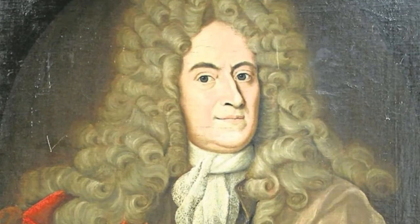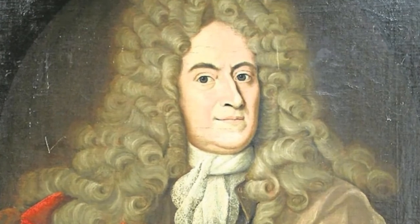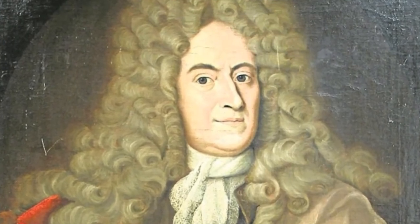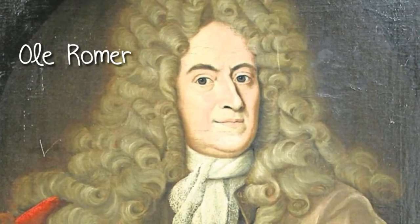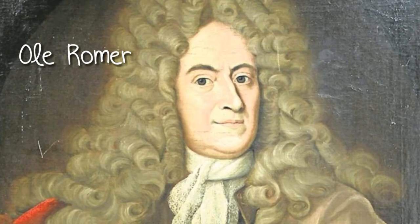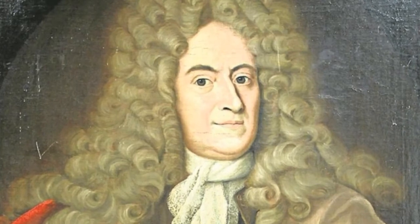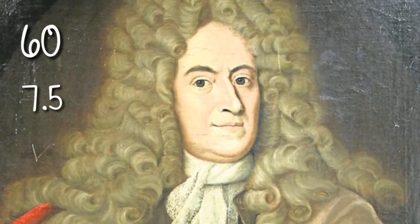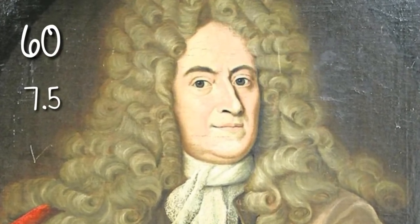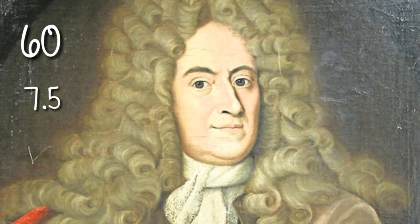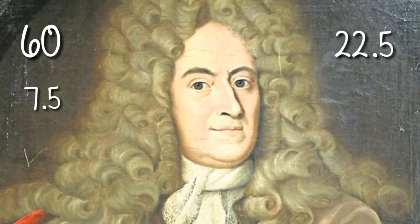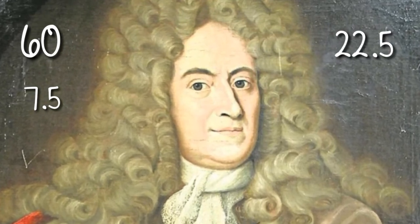Daniel Gabriel Fahrenheit developed his thermometer based on the work of Danish physicist Ole Romer, who decided the boiling point to be 60 degrees, 7.5 degrees as the freezing point of water, and 22.5 degrees as normal body temperature.